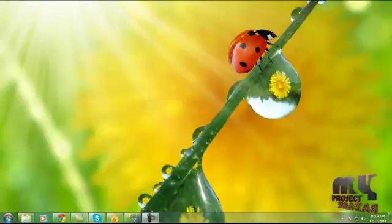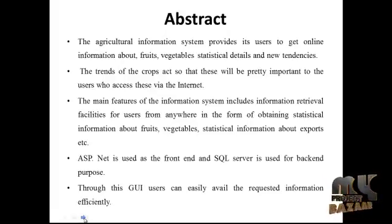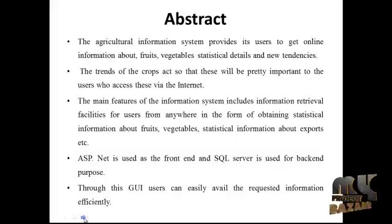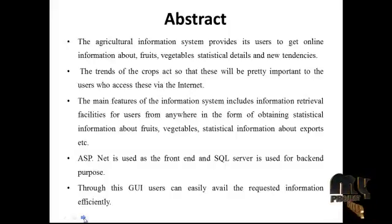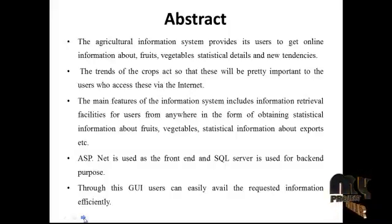Hi, welcome to my project basa.com. Our process is an Agriculture Information System. Starting with the abstract: the Agriculture Information System provides users information about fruits, vegetables, statistical details, and new tendencies — the trends of the crops — so that this will be important to users who access it via the internet.